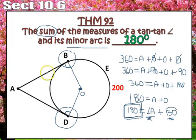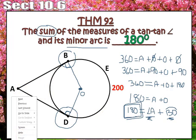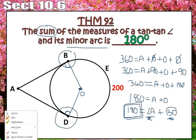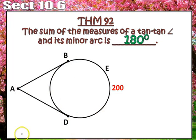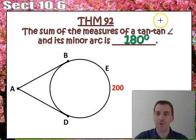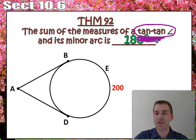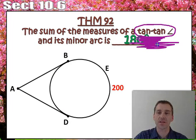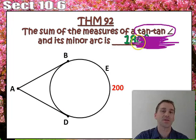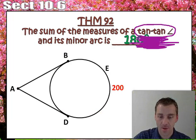And anytime you have a tangent, tangent angle, boy, I hope that you, let me erase these things, I hope you highlight, I hope you circle, I hope you do what you need to do. But notice, it just says tangent, tangent angle. It's not secant tangent, it's not secant secant, it's not inscribed, it's not anything else. It is just tangent, tangent angle.